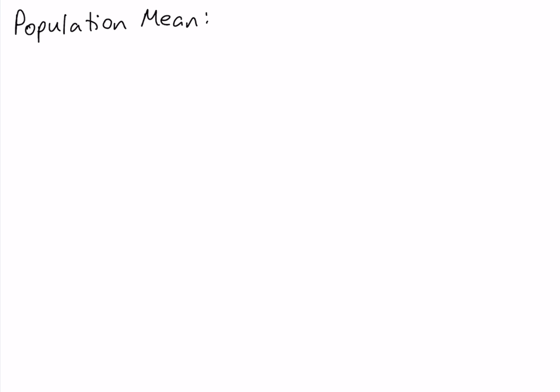We're going to be talking about confidence intervals of the population mean when the population standard deviation, sigma, is unknown. When doing confidence intervals of the population mean, we have two cases: one when the population standard deviation is known, and the other when it's unknown. The main difference between these two cases is the probability distribution used. When sigma is known, you use the z-distribution; when sigma is unknown, you use the t-distribution.